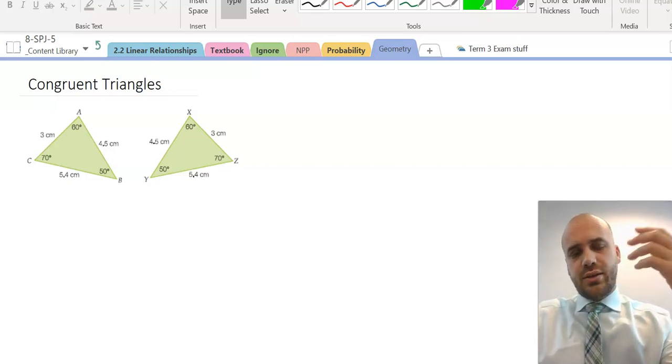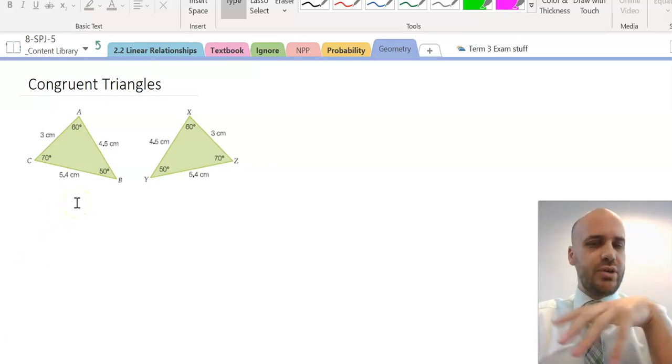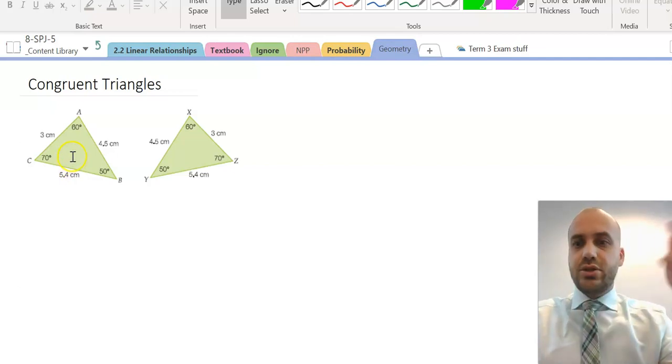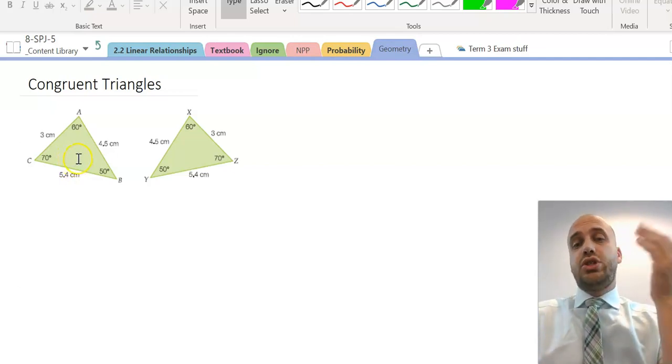We already know what congruent figures are. These are congruent triangles, and we're very interested in those. So, these are congruent triangles because they're the same shape.